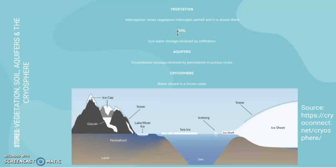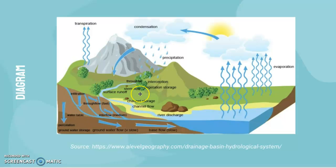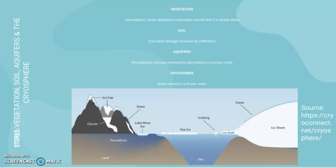Now let's look at stores — the different places water in the drainage basin might be stored. Vegetation stores water through interception, when vegetation intercepts rainfall and stores it. Soil water storage is received by infiltration. Aquifers are located in the groundwater storage zone and are recharged by percolation through porous rocks. Finally, the cryosphere is all water stored in a frozen state — including ice caps, snow, glaciers, lake or river ice, permafrost, sea ice, icebergs, ice shelves, and ice sheets.